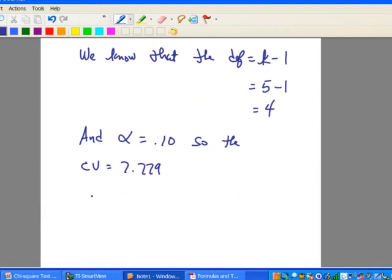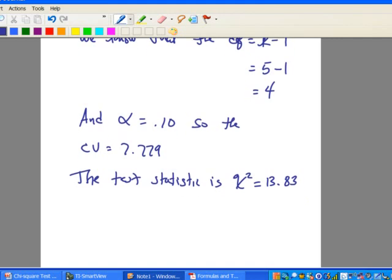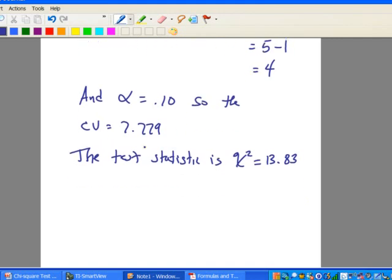So let's go ahead and record that. So the test statistic is chi-square equals 13.83. All right. So we're doing pretty good now.